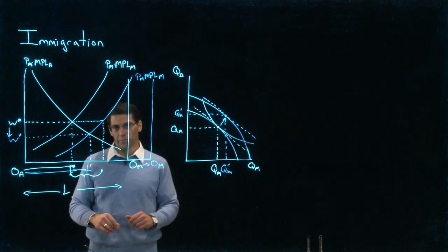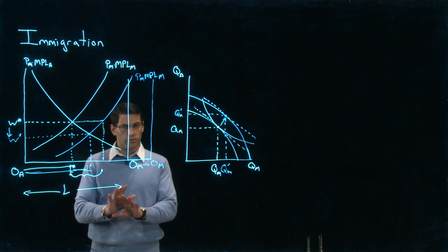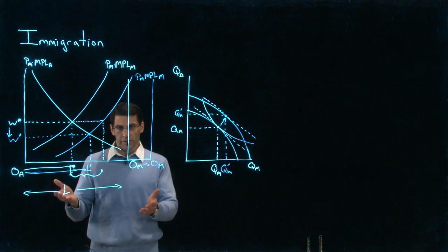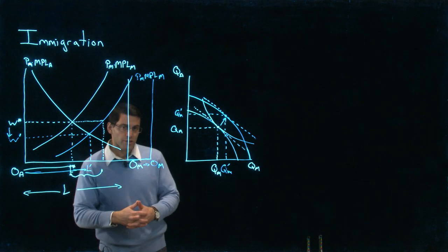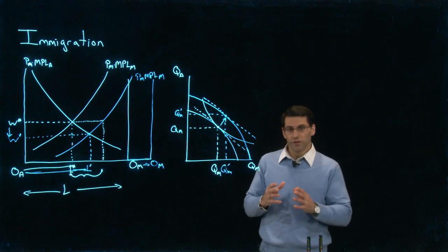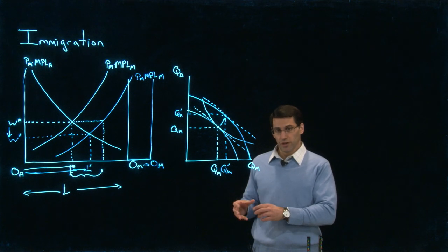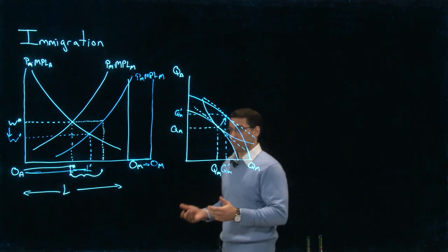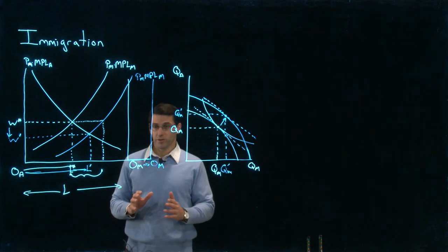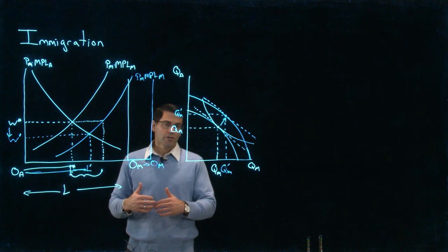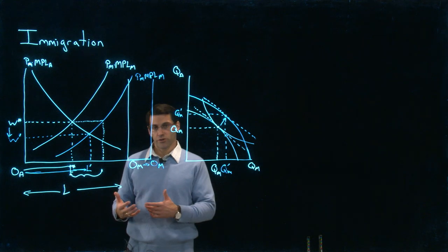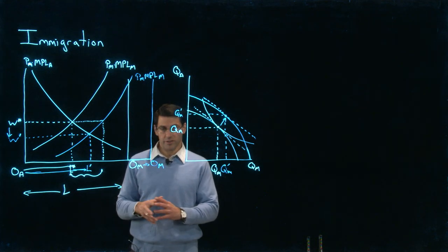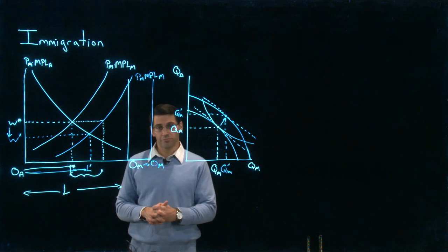Sticking with the short-run analysis for the specific factors model — one kind of homogeneous mobile worker — what do we see clearly? The first thing that's easy to see is that wages drop. The way we've set up the model, immigrants are directly competing with native workers, putting downward pressure on wages. That's a big and important assumption. When we talk about empirical studies estimating the effects of immigration on native workers, we'll have to think hard about whether that assumption holds and under what conditions.